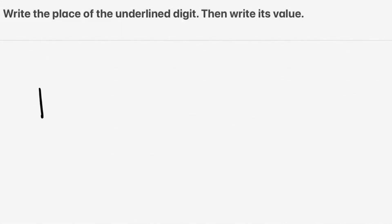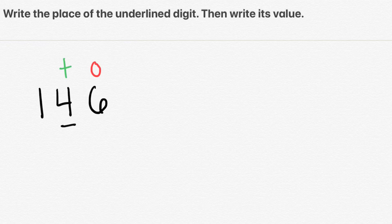We have the number 146, and the 4 is underlined. First, we need to remember place value. We begin with 1s, then 10s, and then 100s. Now, this is silly, but I tend to remember that by thinking of H2O — water.